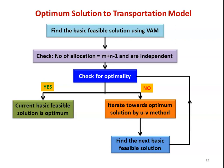We recall the methodology of calculating the optimum solution for the transportation model. First we have to find out the basic feasible solution using Vogel's Approximation Method. Then we have to check the number of allocations, which means they are equal to m plus n minus 1 and are independent. Independent means they should not form a closed loop — all the allocations should not form a closed loop within the matrix.